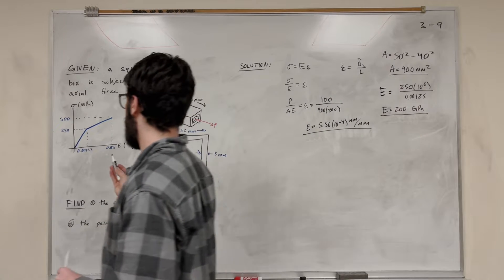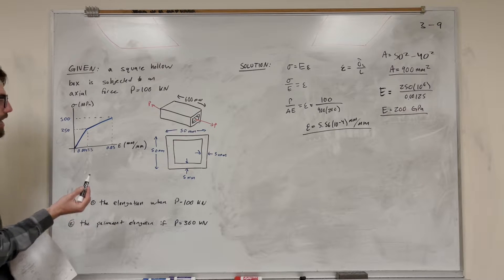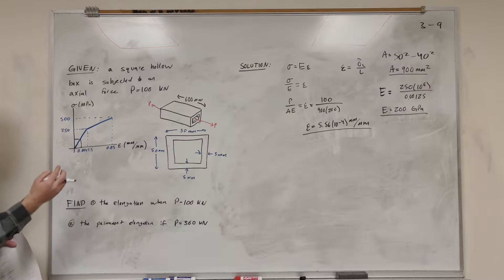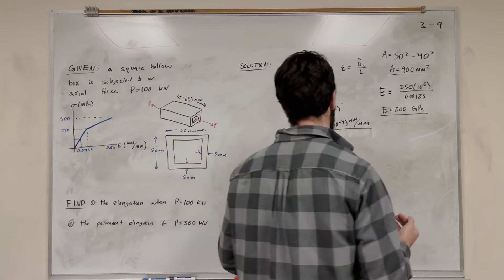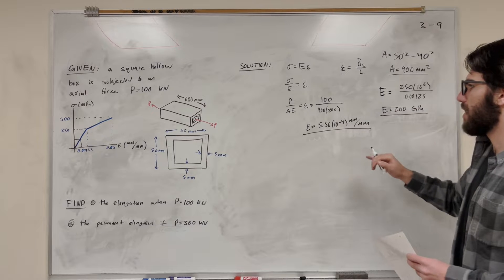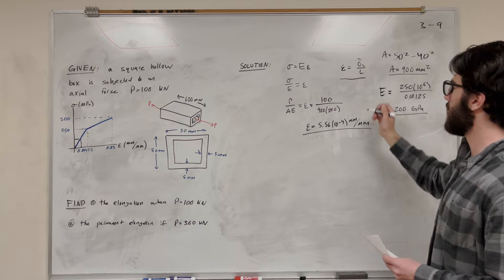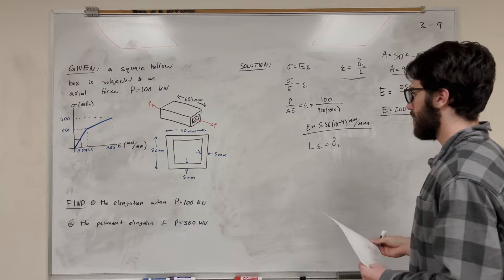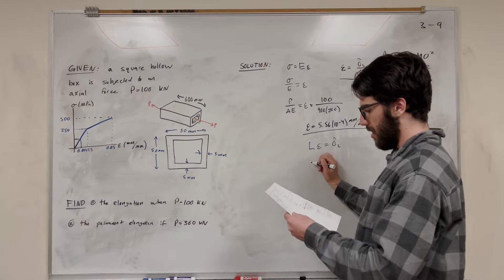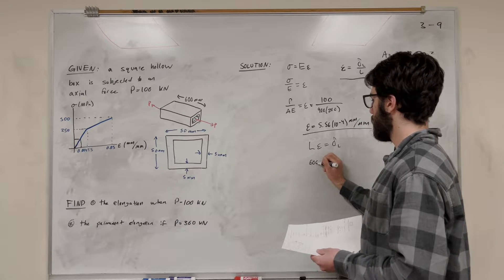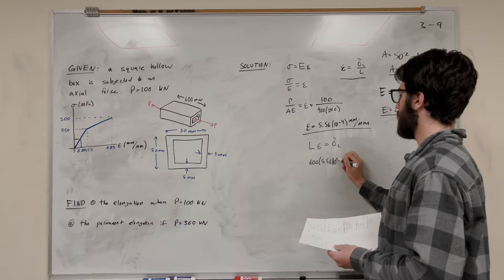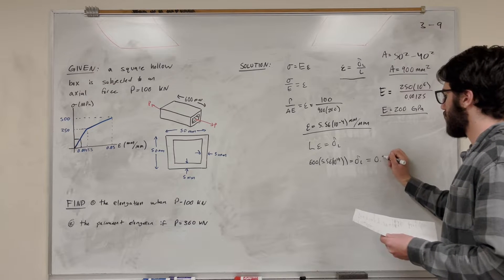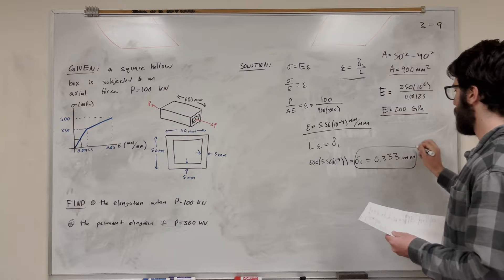This tells us we're going to be below this point — that means we're still in our elastic region. So we can solve for elongation normally. Going back to the strain equation, we multiply the original length over to get that L times epsilon equals the change in L. Our length is 600 millimeters, so 600 times 5.56 times 10 to the negative 4 gives us the change in L, which equals 0.333 millimeters. That's part A.